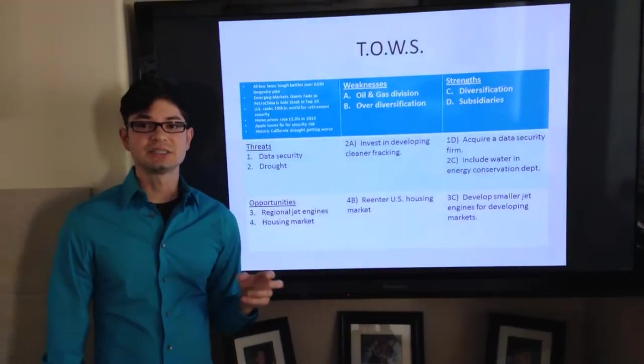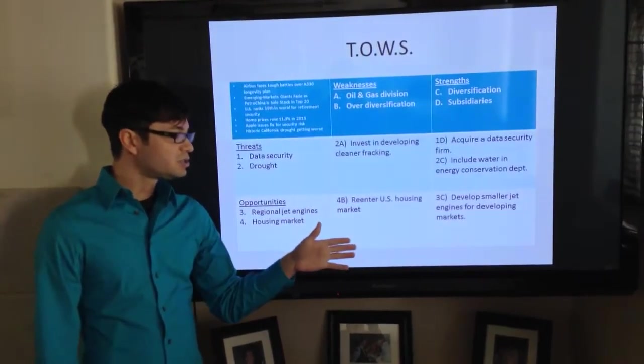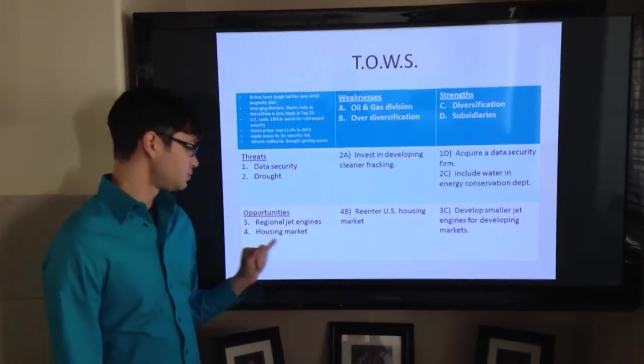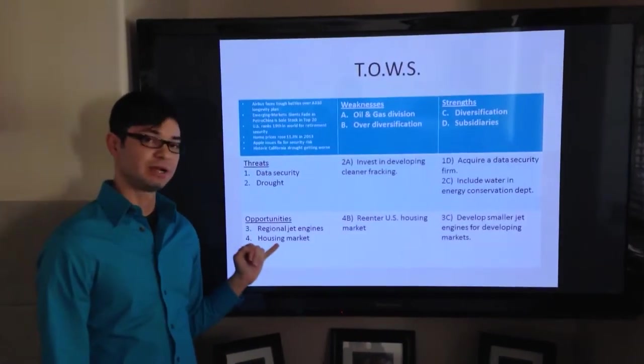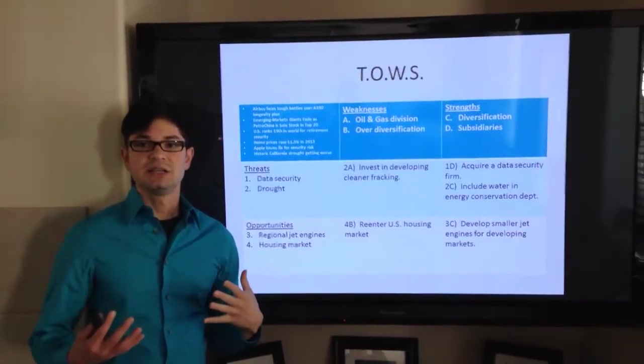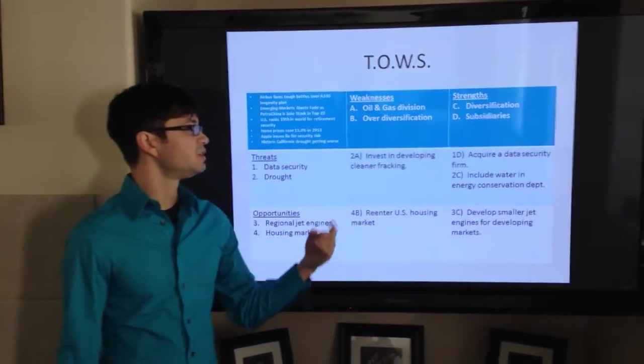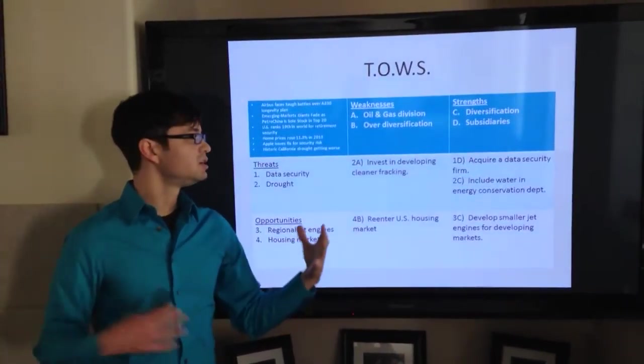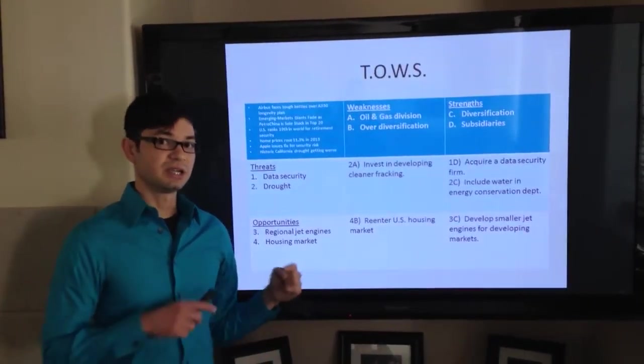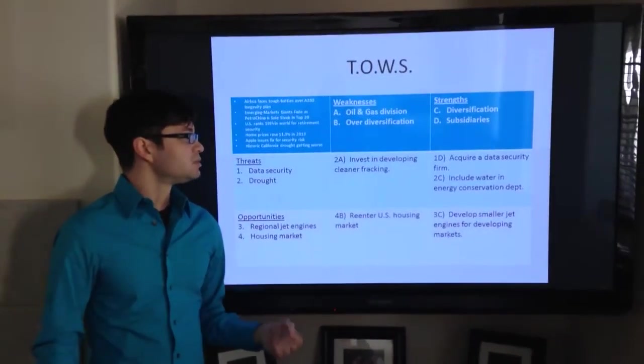In 2007, they actually exited the U.S. housing market. If they looked into re-entering the housing market, they'd be able to take an opportunity of the recovery as well as not over-diversified because they already have segments in other foreign countries, so if they applied those divisions, that means they're using those divisions here, they'd still have the same division, but they'd be able to re-enter the market.